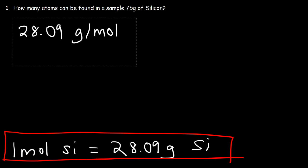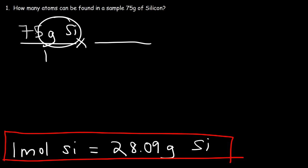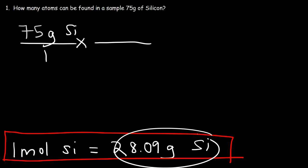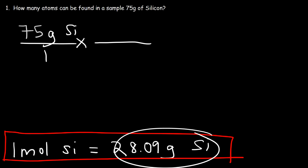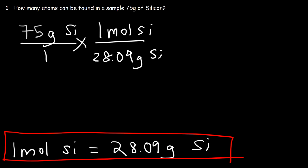So let's start with 75 grams of silicon and convert it to moles. Since we have the unit grams of silicon on the top left, we need to put grams of silicon on the bottom right so that those units will cancel. So this is 28.09 grams of silicon on the bottom, and on top we're going to put one mole of silicon.